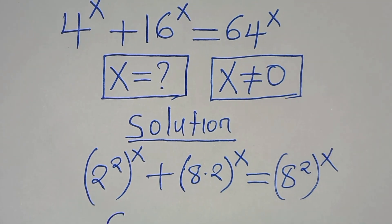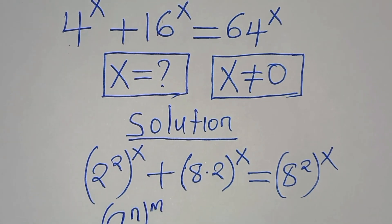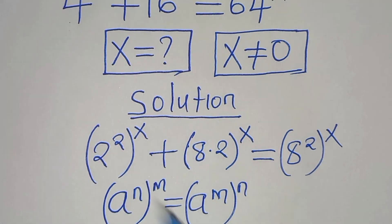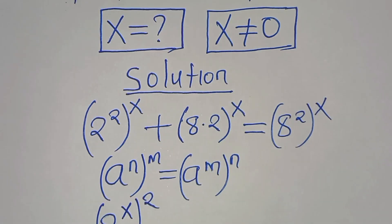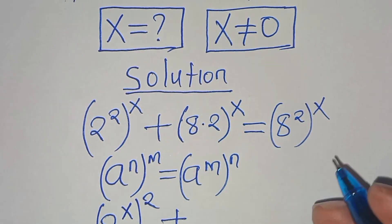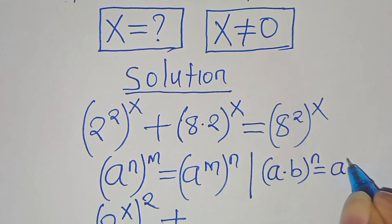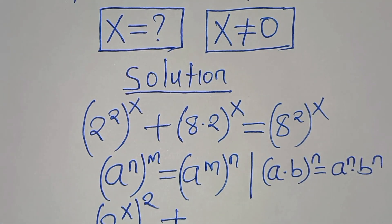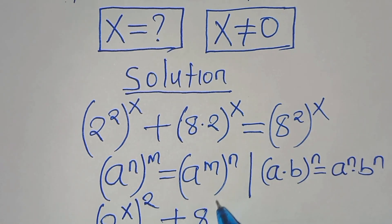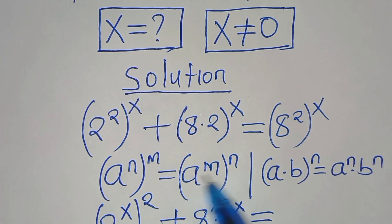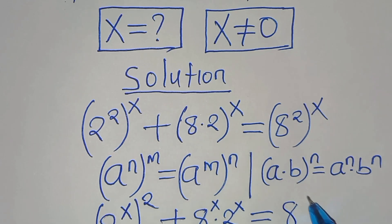Now, 2 to the power of 2 to the power of x is in the form of (a^n)^m, which we can express as (a^m)^n. This means we have 2 to the power of x, then raised to the power of 2. Also, 8 times 2 raised to the power of x is in the form a times b to the power of n, which equals a to the power of n times b to the power of n. Applying this property gives us 8 to the power of x multiplied by 2 to the power of x, all equal to 8 to the power of x squared.